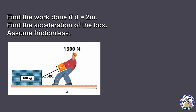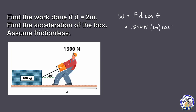For our example number 3, find the work done and the acceleration. This time, the force applied is with an angle with respect to the horizontal. To solve for the work done, we will still be using force times distance, but this time you have to include the effect of the angle using cosine theta. So this is 1,500 newtons times the distance 2 meters and cosine of 20 degrees.